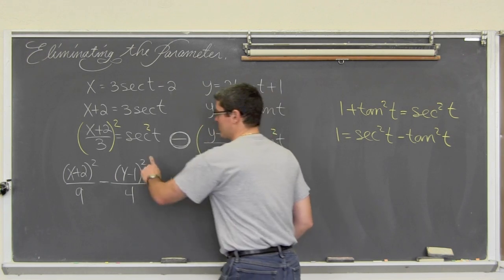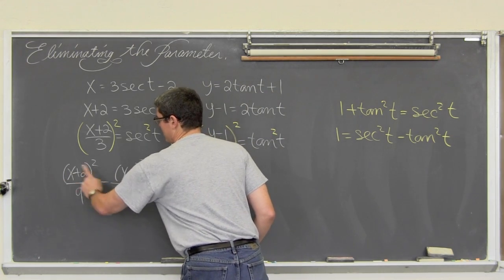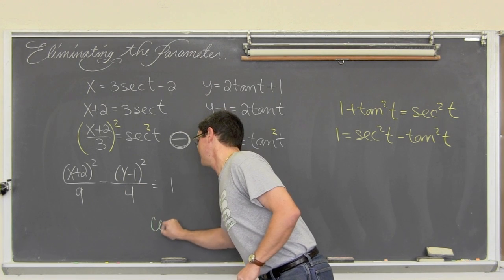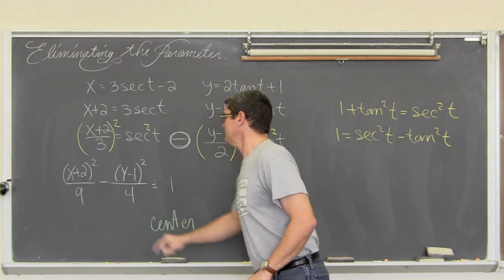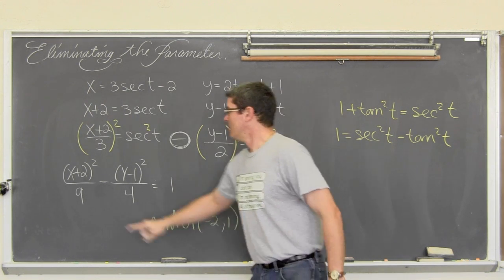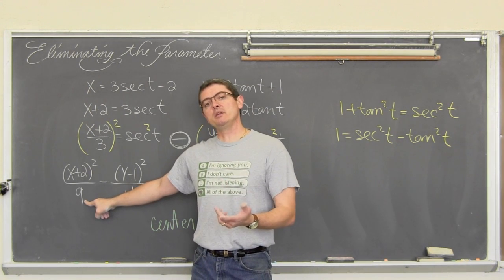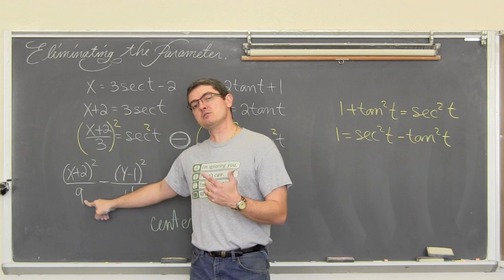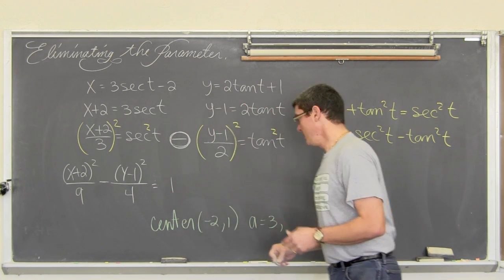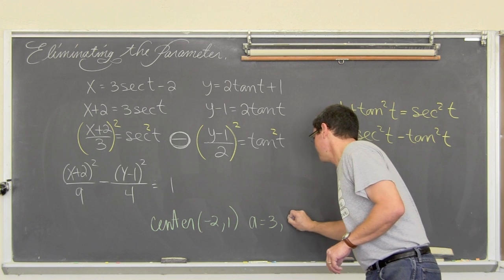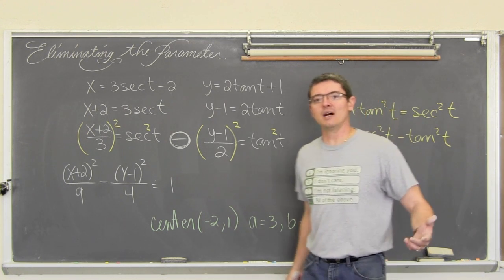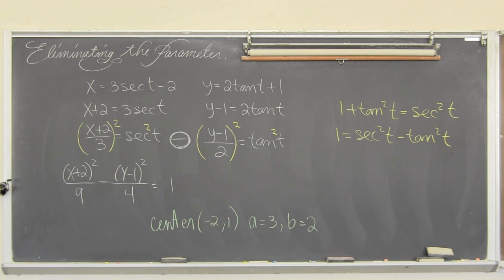And just to really drill home that this is a hyperbola and it is the same one that we graphed in the last video. This is a hyperbola because of the two squared terms with different signs, one positive fraction and one negative. The center is at negative two, one. A comes from square root of the denominator of the positive fraction. So a is equal to three. And b is equal to two. So there you go. I am Mr. Tarrou. BAM! Go do your homework.